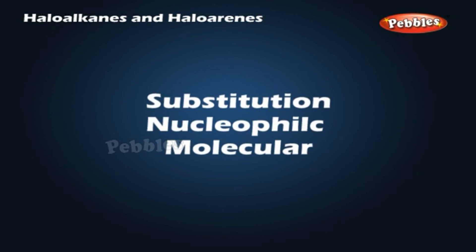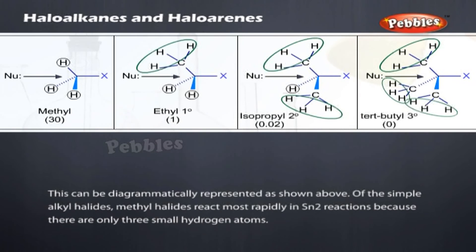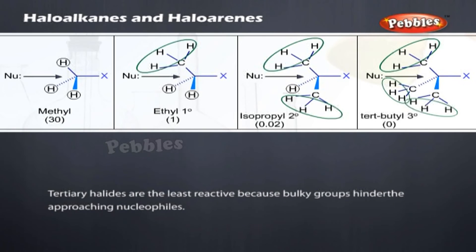SN2 — Substitution Nucleophilic Bimolecular: the reaction between CH3Cl and hydroxide ion to yield methanol and chloride ion follows second-order kinetics; that is, the rate depends on the concentration of both reactants, as diagrammatically represented above. Of the simple alkyl halides, methyl halides react most rapidly in SN2 reactions because there are only three small hydrogen atoms. Tertiary halides are the least reactive because bulky groups hinder the approaching nucleophile.